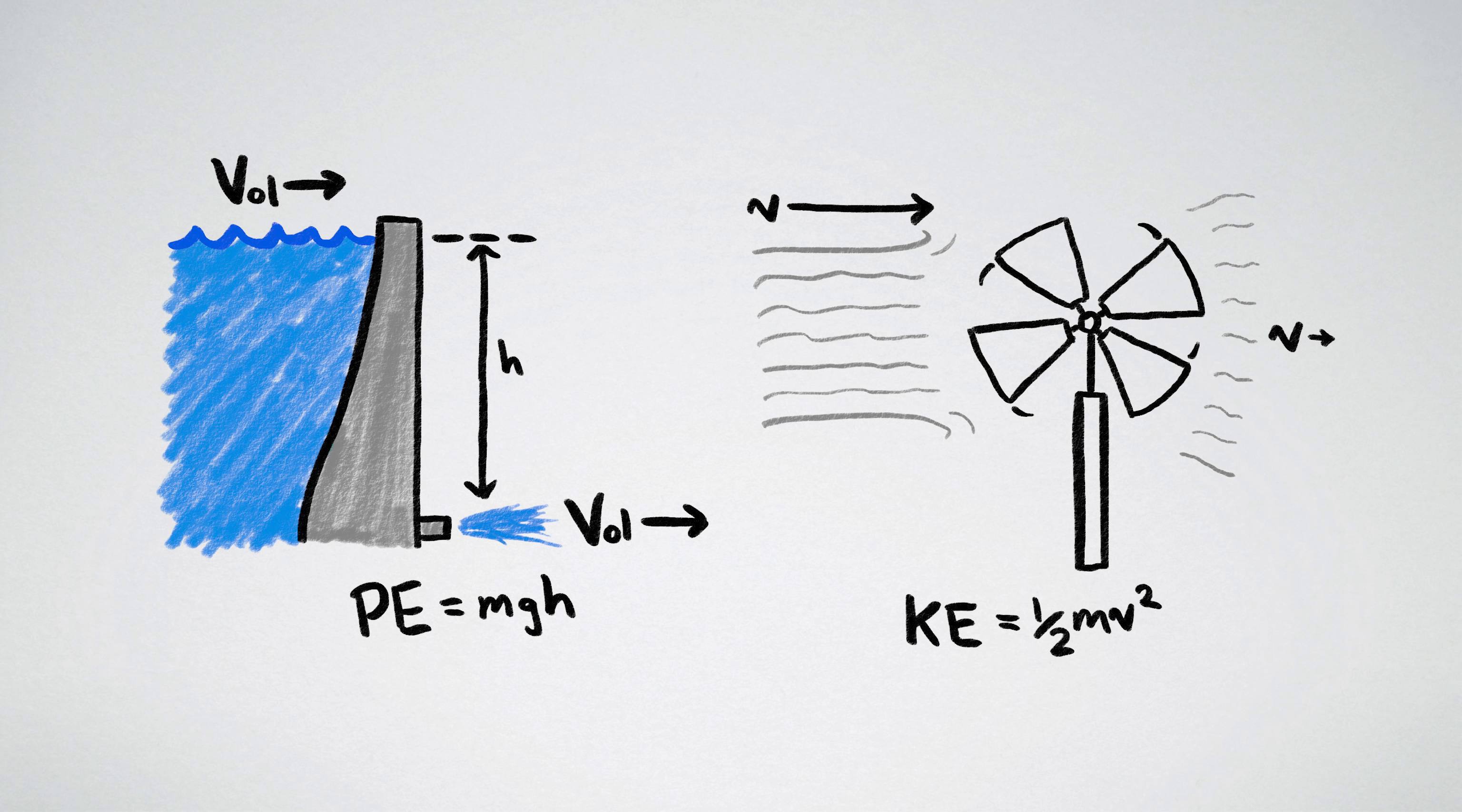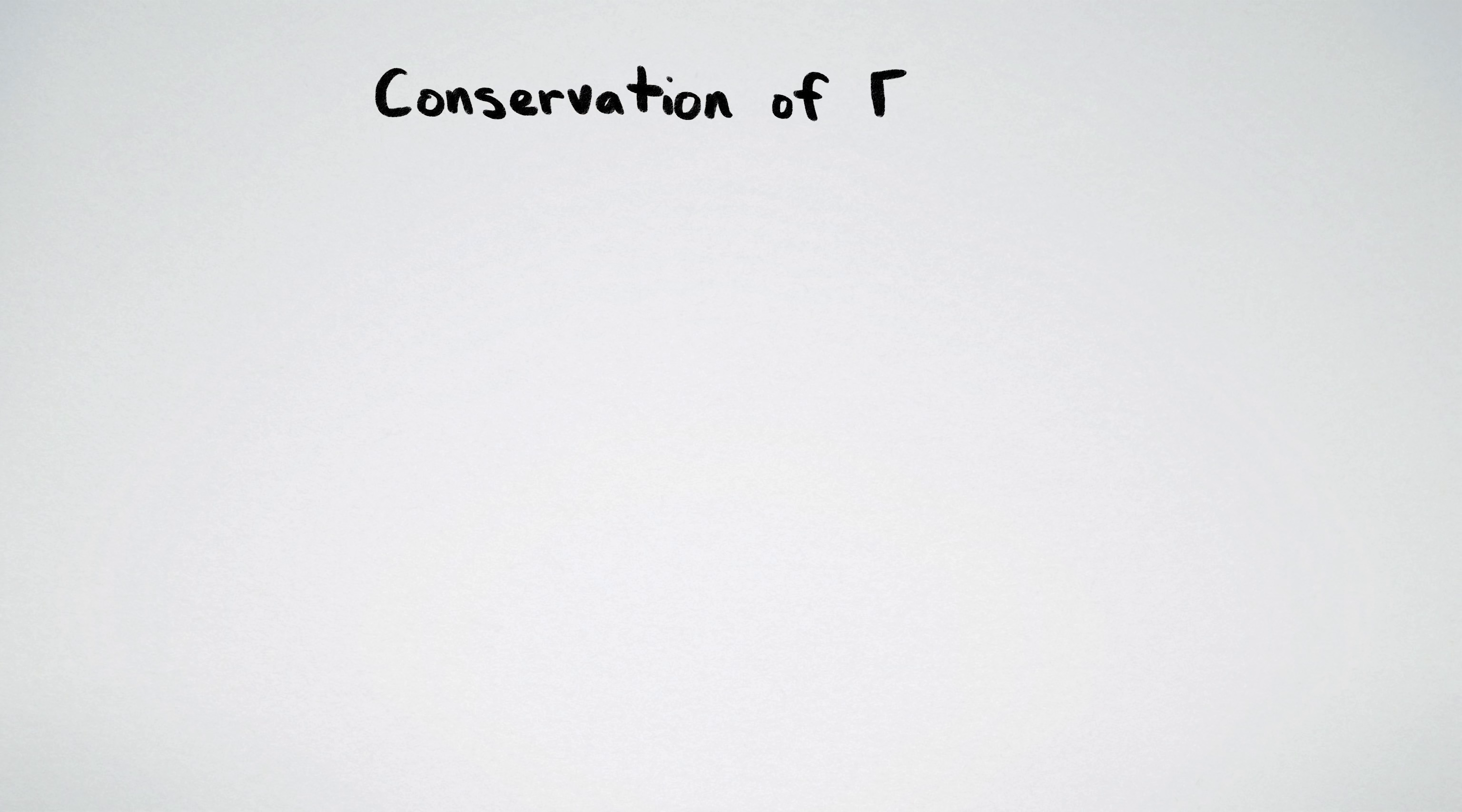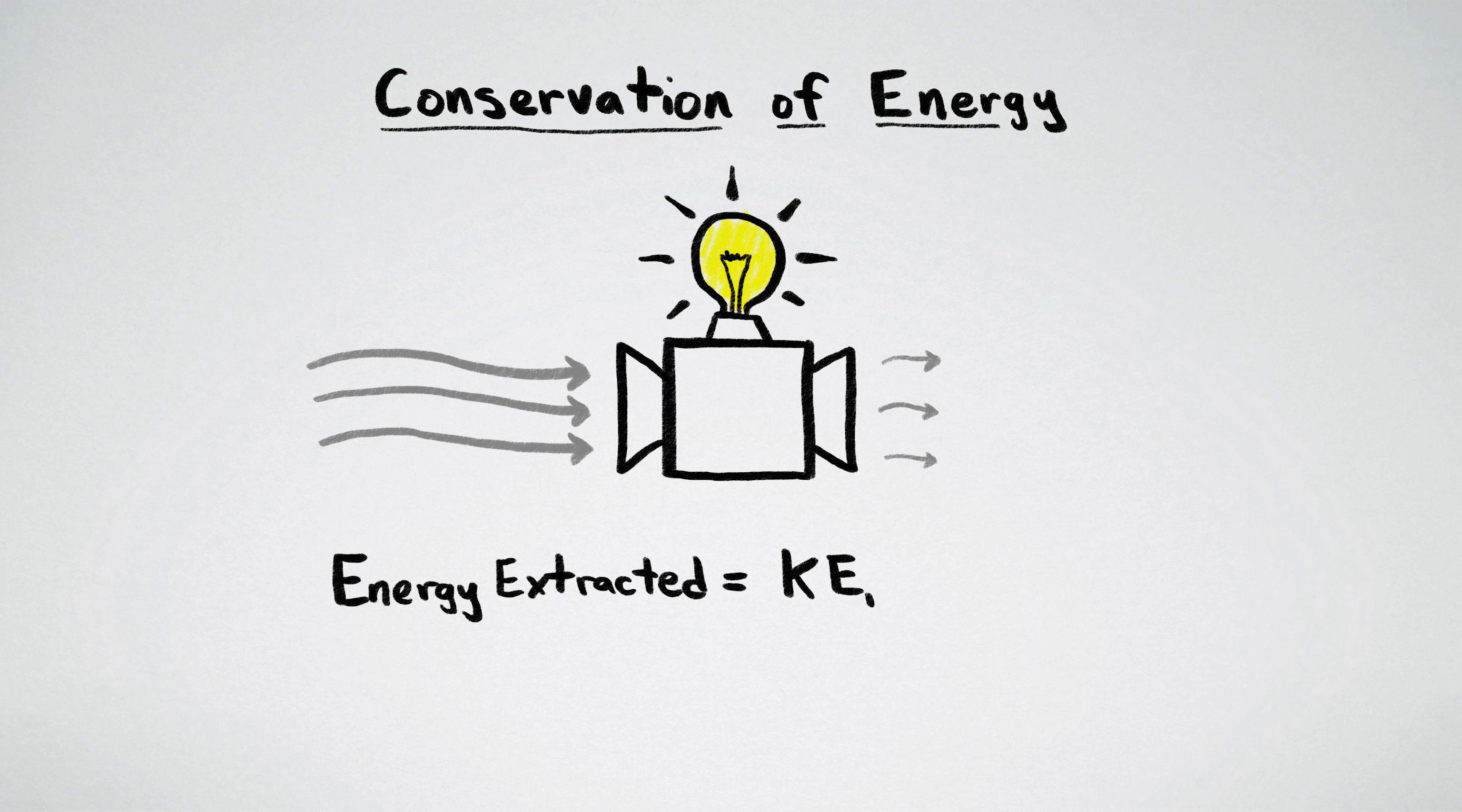So how much wind should a windmill mill? Well, the maximum possible amount of energy you can extract from the wind is simply the difference between its initial and final kinetic energy.